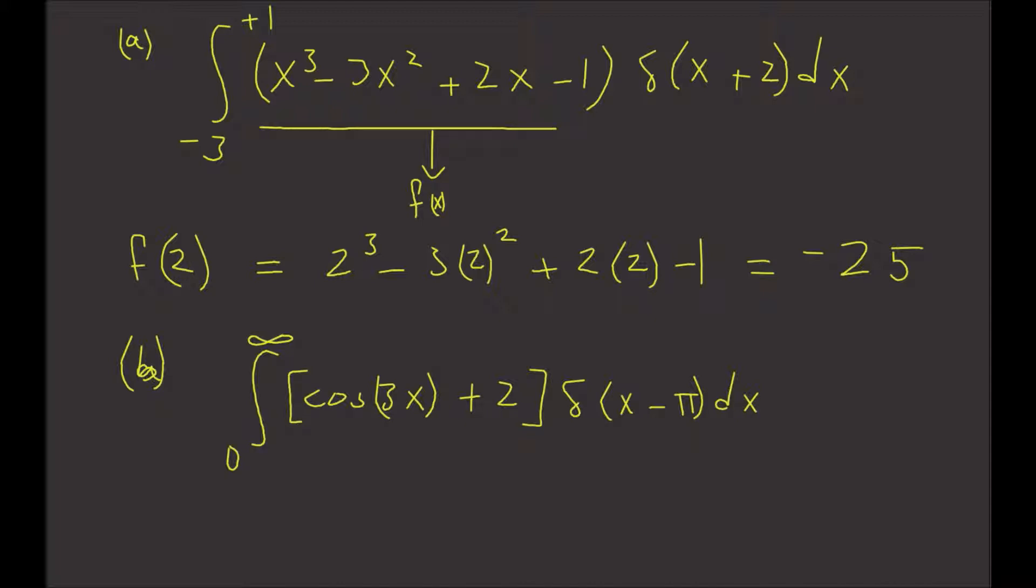The same thing—we're just going to evaluate our function f(x), this is our function f(x), at the point π. Since π sits between 0 and infinity, f(π) equals cos(3π) + 2, which is equal to -1 + 2, which is equal to 1.